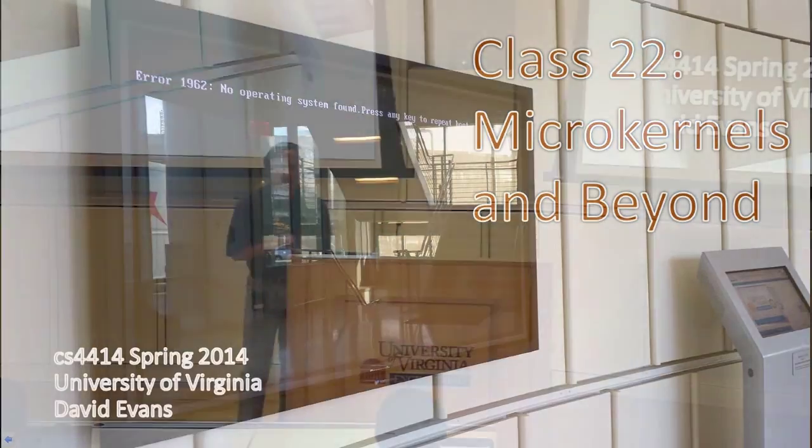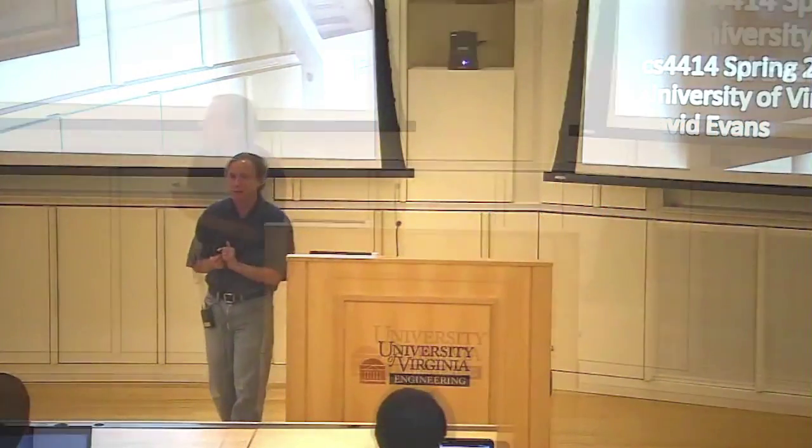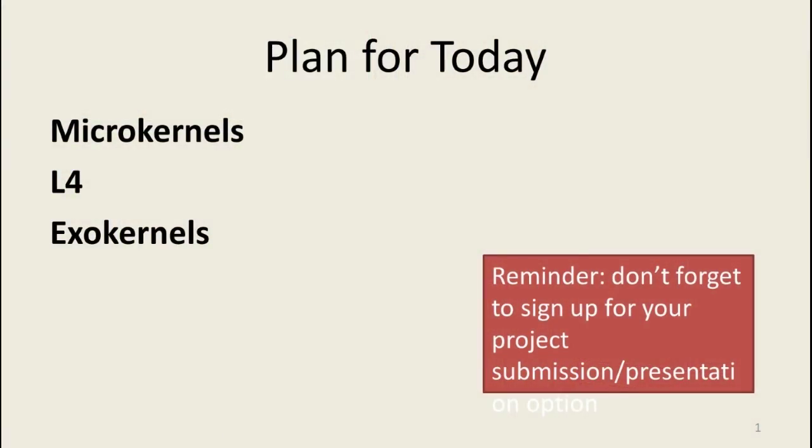What we're going to talk about today is looking at how to design an operating system. We spent a fair bit of time in the last few classes going down this path, looking at a very specific theoretical question at a very low level: how do you provide mutual exclusion? Now we're going to jump way up to the 40,000-foot view and look at what are the big issues in how to design an operating system kernel.